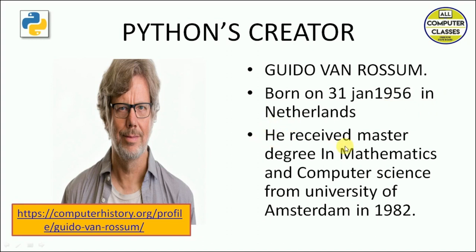Guido van Rossum received a master's degree in mathematics and computer science from the University of Amsterdam in 1982. Mathematics is closely related to computer science because computer science involves a lot of calculations and logic. If you have a logical and analytical brain, it will be easy to become a developer or software engineer. You can visit a link to know more about his work.